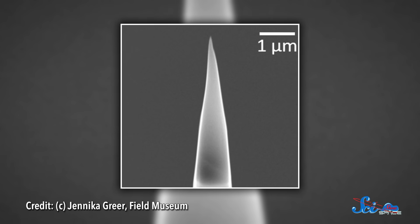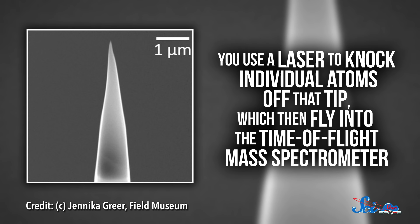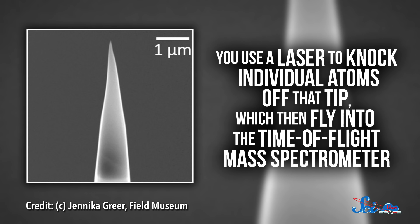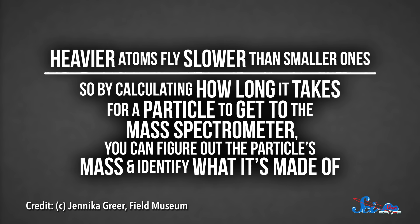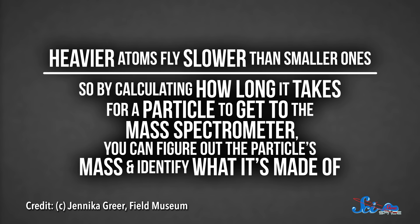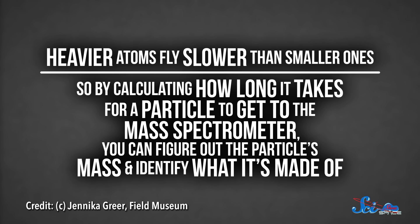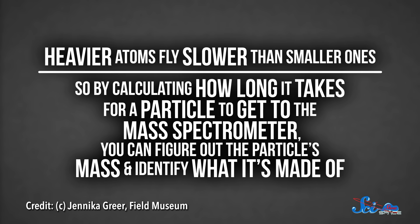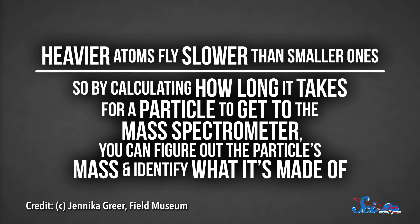First, you use a beam of ions to carve a tip out of your sample. Then, you use a laser to knock individual atoms off that tip, which then fly into the time-of-flight mass spectrometer. Heavier atoms fly slower than smaller ones, so by calculating how long it takes for a particle to get to the mass spec, you can figure out the particle's mass and identify what it's made of.